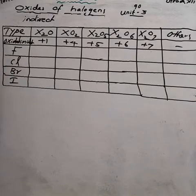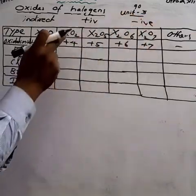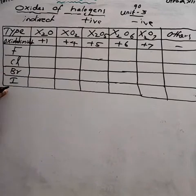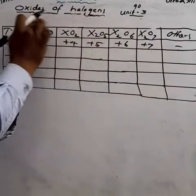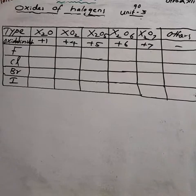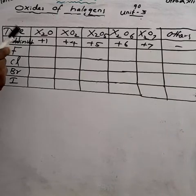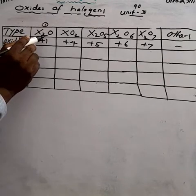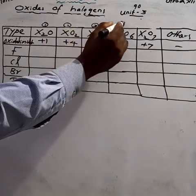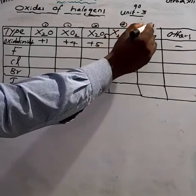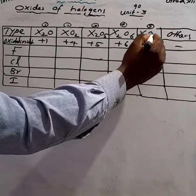Except fluorine, all other halogens have a positive oxidation state. Fluorine only has a negative oxidation state. Except fluorine, chlorine, bromine, and iodine have a positive oxidation state. Looking at page number 90, there is a table explaining five types of oxides of halogen: X₂O, XO₂, X₂O₅, X₂O₆, X₂O₇, and others.